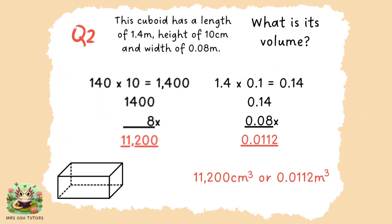Question two. Volume: to calculate it, we need to multiply width by height by length. Rather cheekily, this question had mixed units of measurement. You first needed to decide whether to calculate in metres or centimetres and convert accordingly. Both ways are shown. Whichever way you calculated it, hopefully you can find your answer, and remember to include the units at the end — either centimetres cubed or metres cubed.